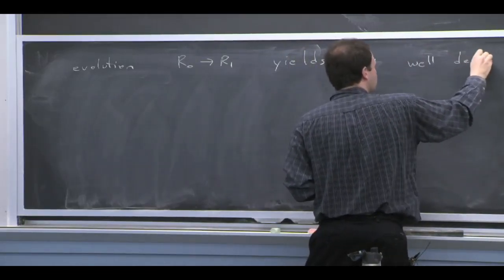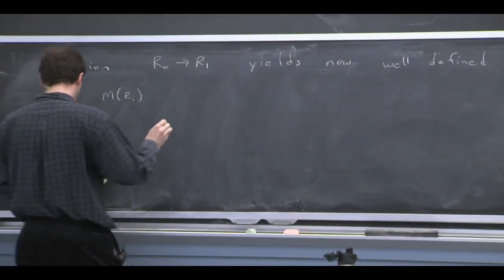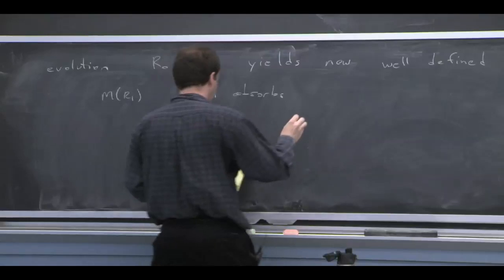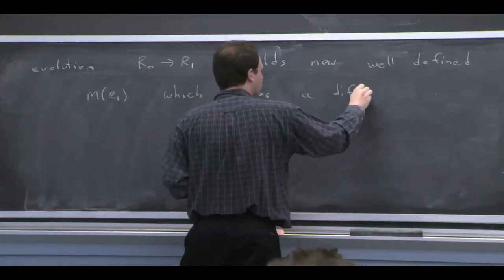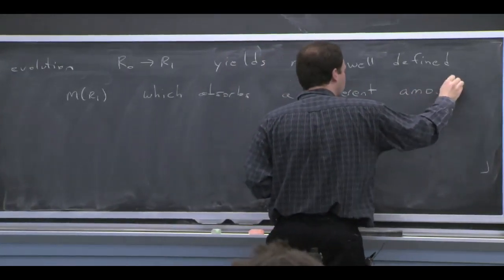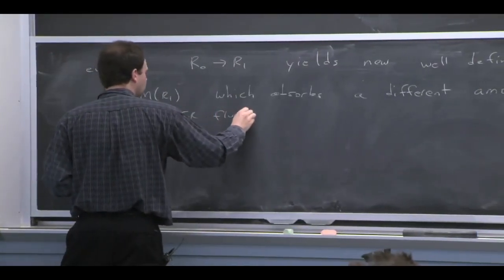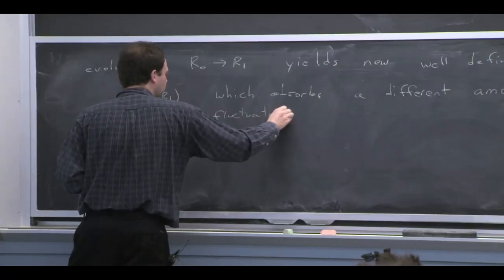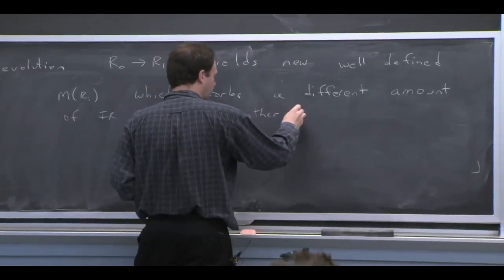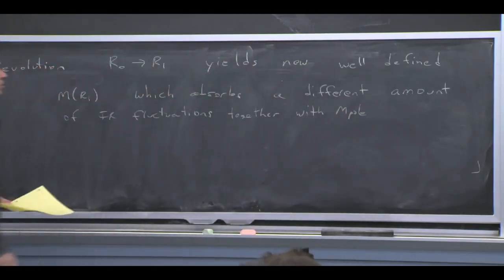So the evolution would just yield a new, well-defined mass, m of R1, which absorbs a different amount of IR fluctuations. A shell out to R1 instead of just out to R0, if you like. So you're absorbing those fluctuations together with m pole to get something well-defined. And how much you absorb is related to this cutoff.